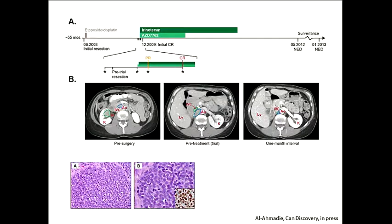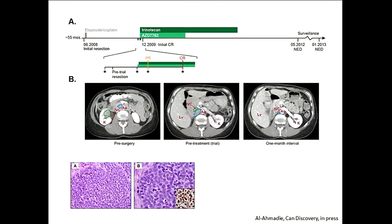They gave her cisplatin and etoposide — the way you would treat a small cell lung cancer patient — hoping to prevent recurrence. Unfortunately, within a few months her cancer came back with metastases to the kidneys and bulky lymphadenopathy. The surgeons actually took her back to the operating room and tried to cut all this out, but within a few months her cancer came back again with lymph node metastases and bone metastases.